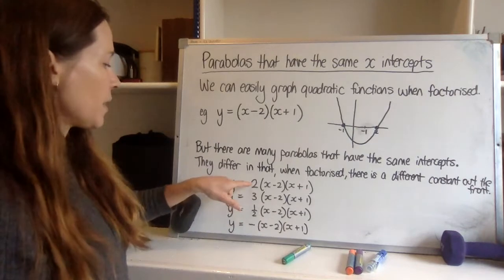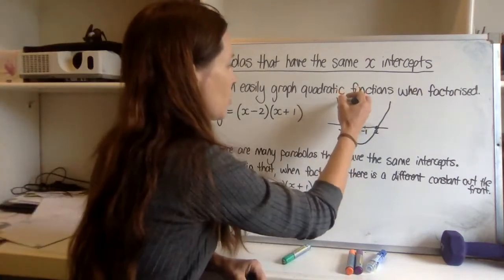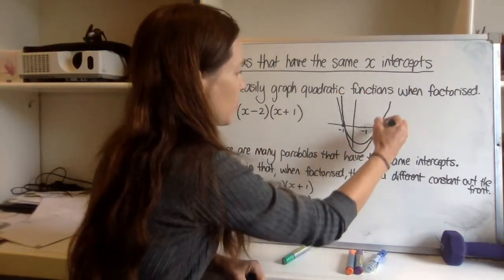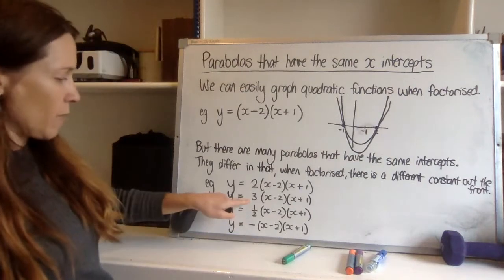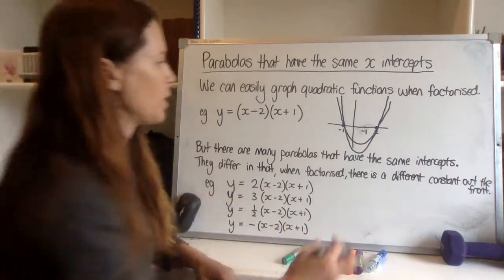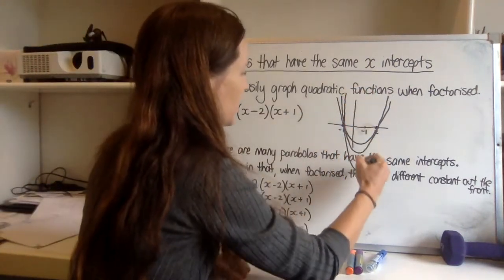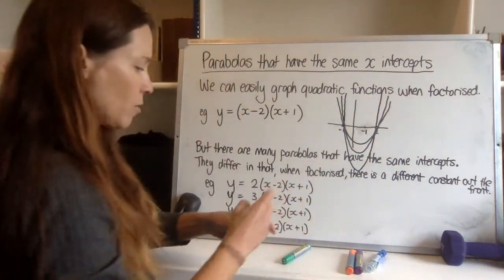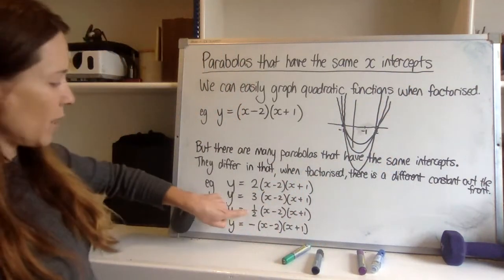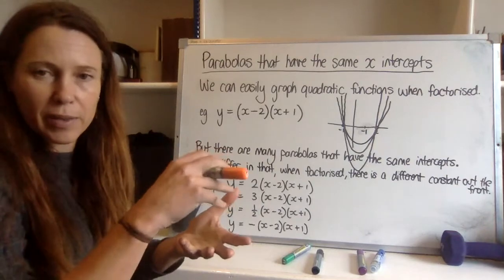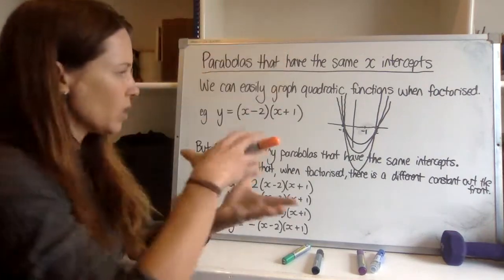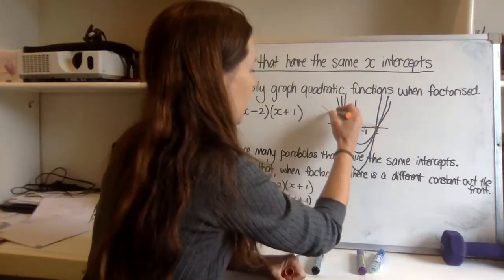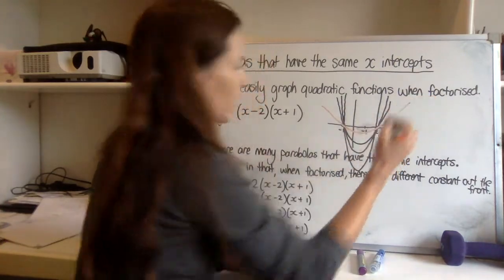But what would happen is in this case we'd have one that is more stretched so it would sit down like this more, or we'd have one that's even more stretched if we've got a 3 out the front so it might be even taller and skinnier and go something like this. We can also have one that's squished, so in other words instead of stretching it we could squish it in this way and it might be actually shorter and fatter coming out like that.